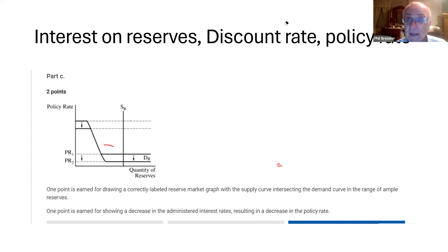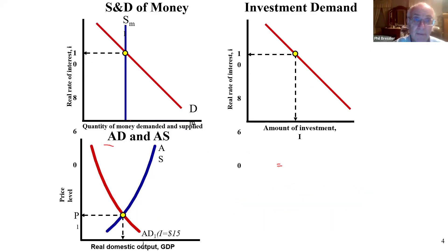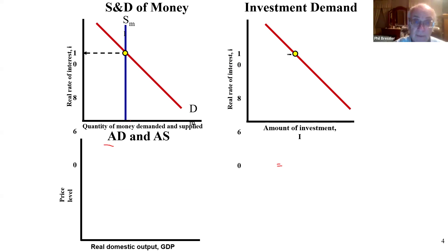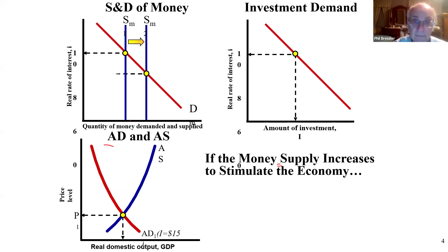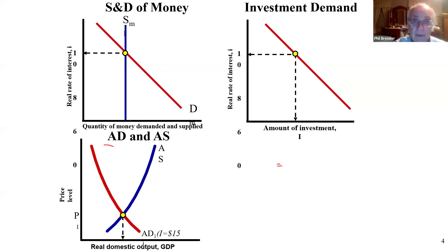If the Fed buys bonds in the ample reserve framework, it's going to shift money supply to the right, but nothing's going to happen because the interest rates are going to stay the same. Similarly, if the Fed sells bonds here, nothing's going to happen because interest rates are going to stay the same. It's a loanable funds graph.